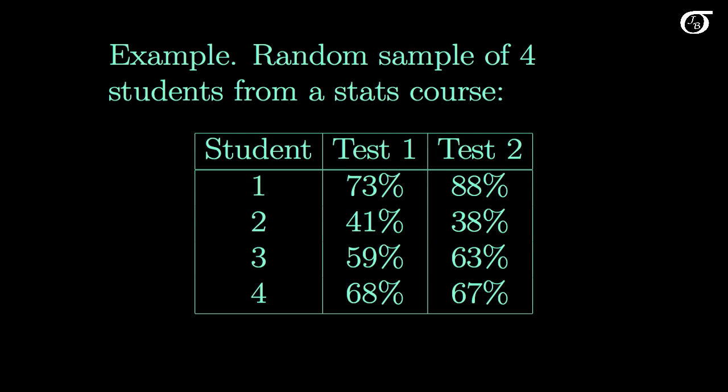Consider this example: four students randomly selected from one of my stats courses. I've taken these four students and got their measurements on the first test and the second test. One important point to note is that this is two measurements on the same student. We cannot consider these samples from test one and test two to be independent samples since we have two measurements on the same person. Anytime there's two measurements on the same person, rock, car, or what have you, that's a dead giveaway that we don't have independent samples and shouldn't be analyzing things using a pooled variance t or Welch's t.